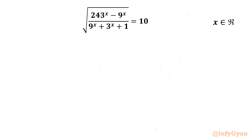Welcome to Infigyan, my dear friends. In today's video, we have one very interesting radical exponential equation. Here we are going to find out real solutions only. The equation is: square root of (243^x minus 9^x) over (9^x plus 3^x plus 1), equal to 10.